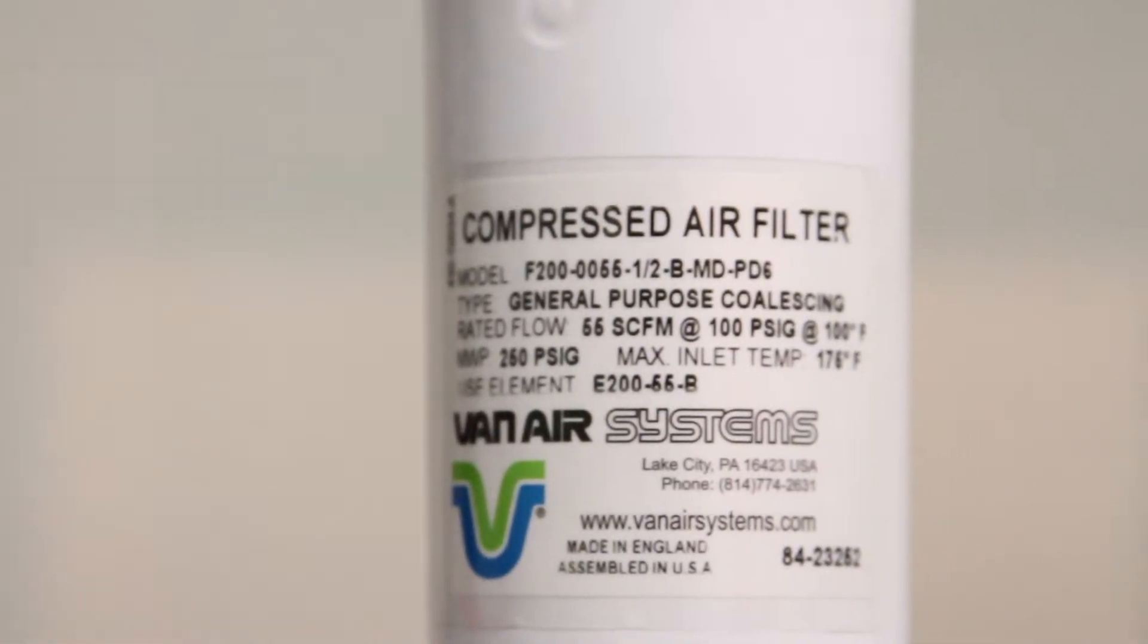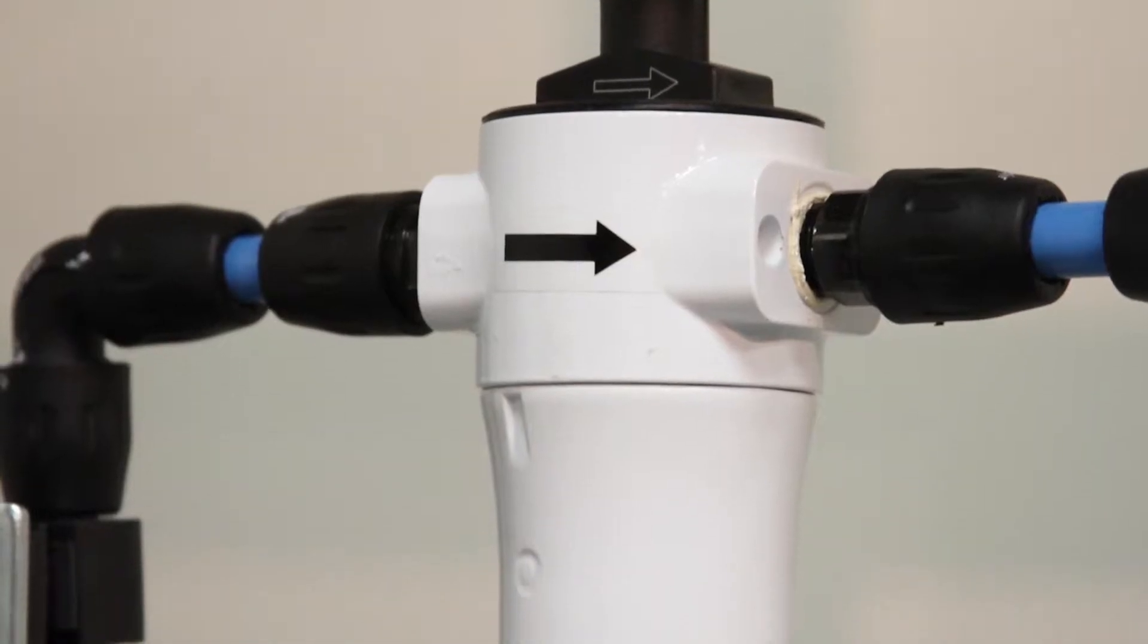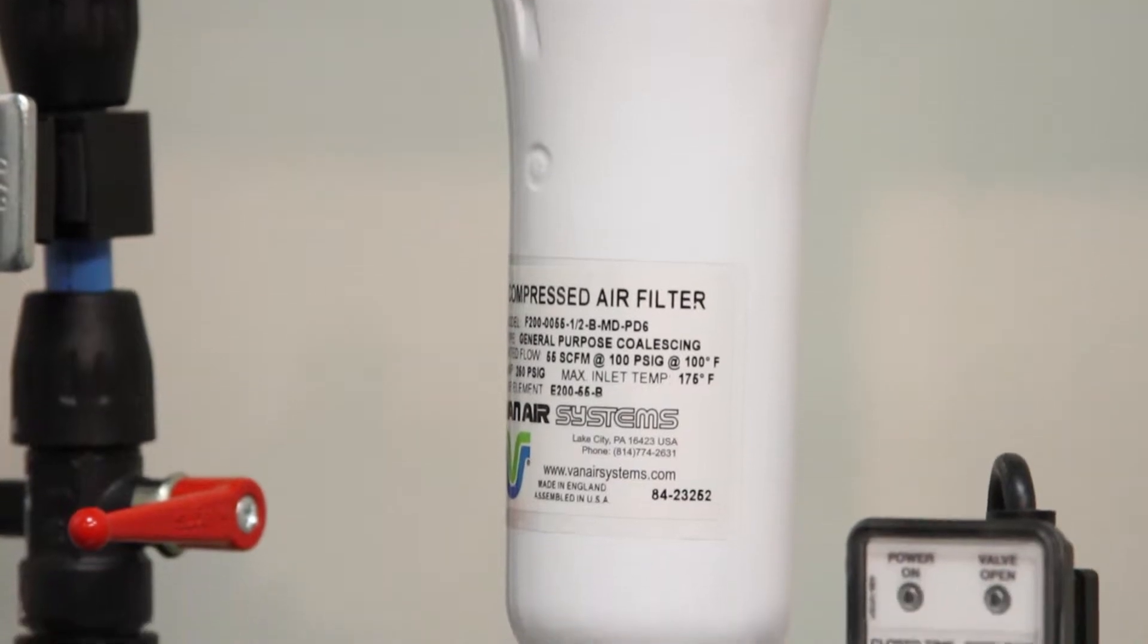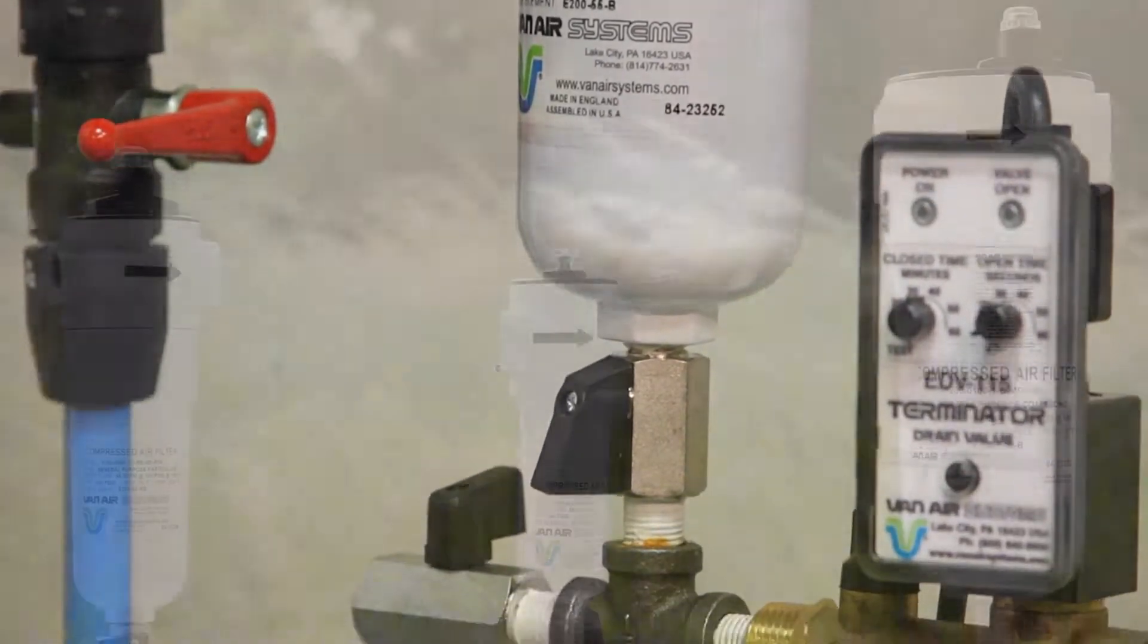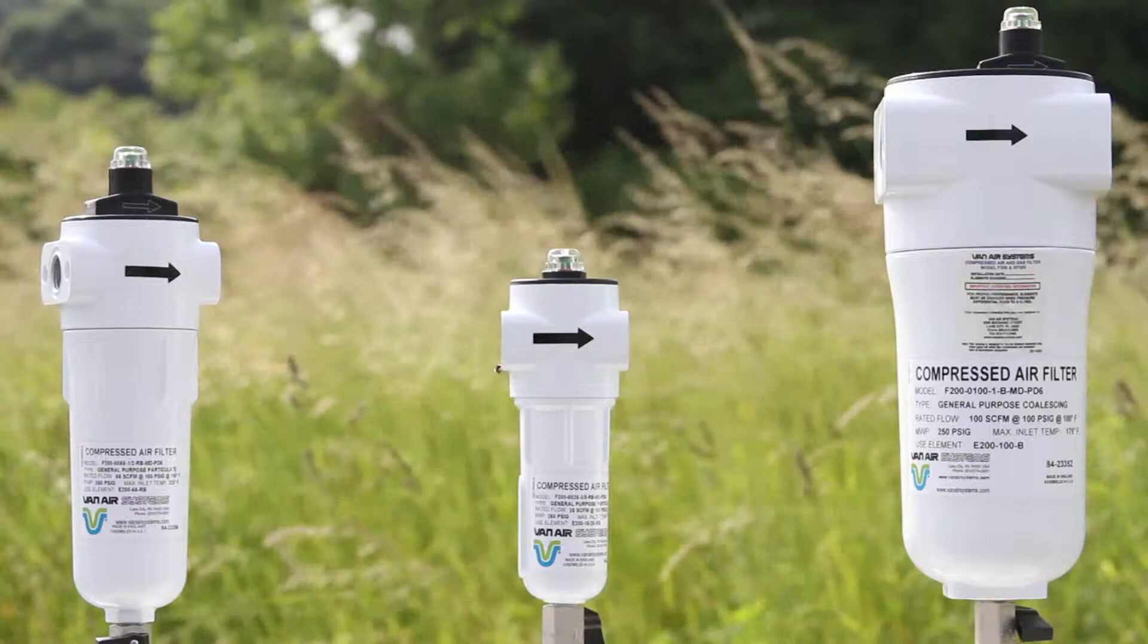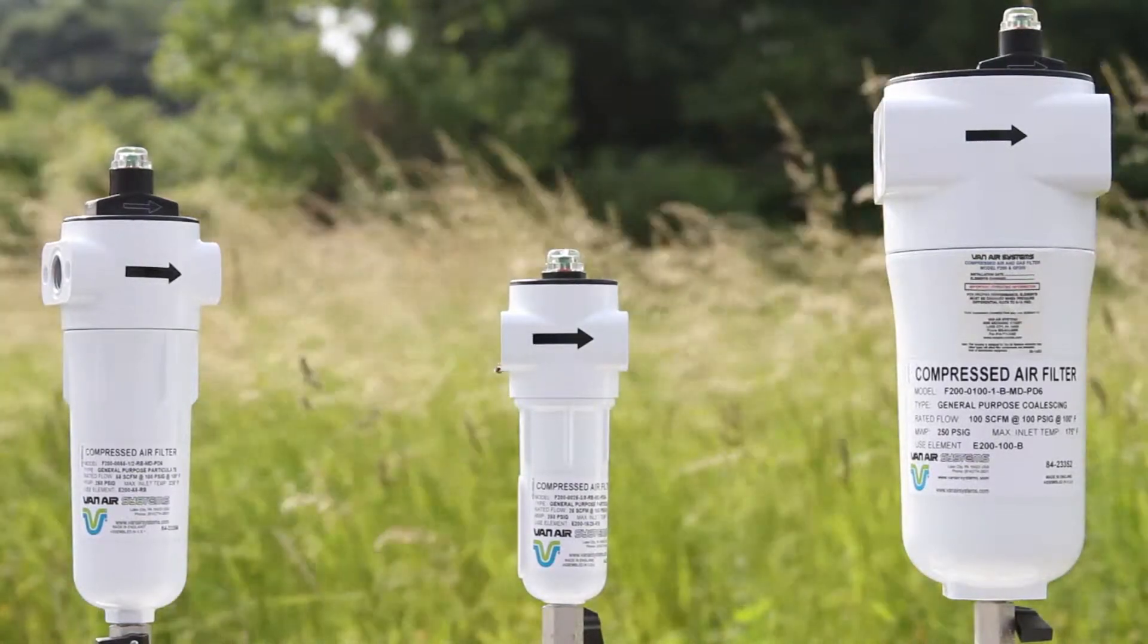Van Air Systems offers a wide range of filter housing designs to match the flow, pressure, and performance of virtually any application. Van Air Systems coalescing and particulate filters are designed to remove contaminants from compressed air and natural gas systems.